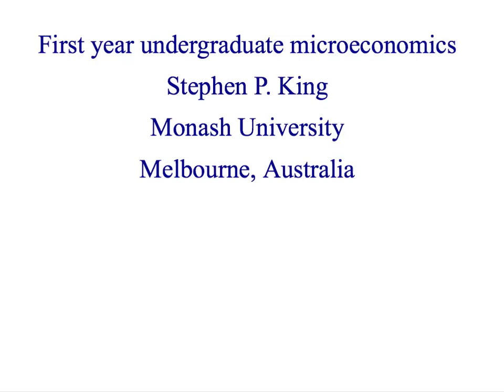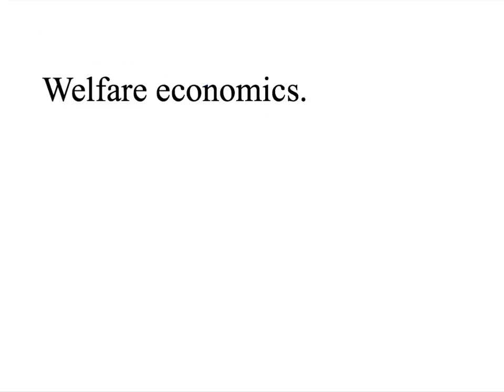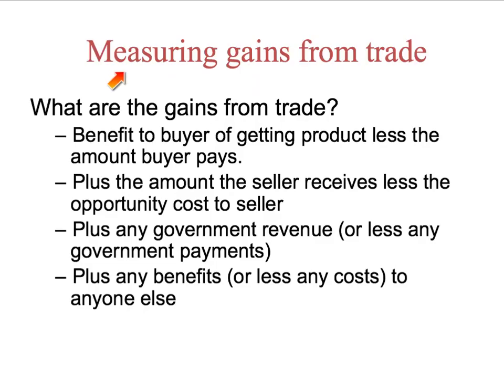Welcome back to First Year Microeconomics. We're talking about welfare economics and looking at how to measure gains from trade. As a reminder, there are four parties who gain from trade: the buyers, the sellers, the government, and anyone else. At the moment we're concentrating on the buyers and we want to look at how much buyers gain from trade.